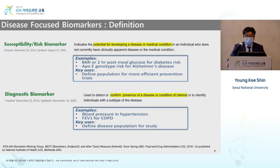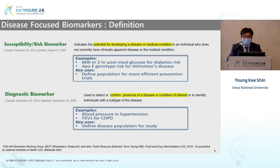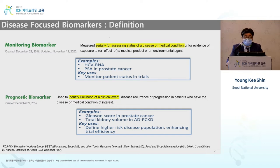As a risk biomarker, one example is Alzheimer's disease APOE type, or BMI for diabetes — these measure the potential occurrence of disease. For diagnostic biomarkers, hypertension is measured with blood pressure, and FEV1 is used for COPD, where exhaled volume is measured. For monitoring biomarkers, RNA can be measured in HCV patients, and PSA can be measured in prostate cancer to serially monitor disease status.